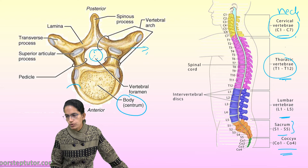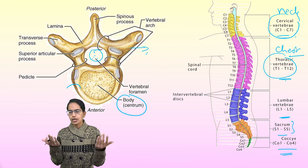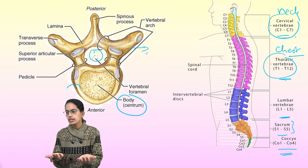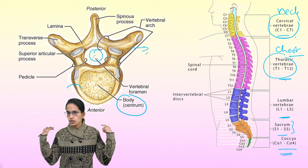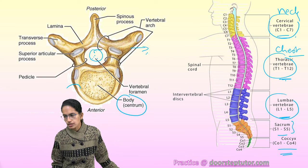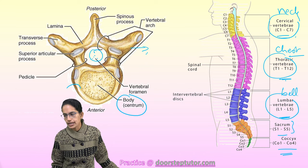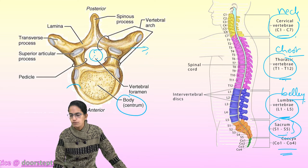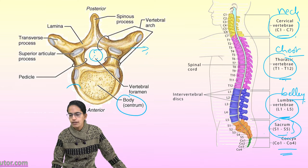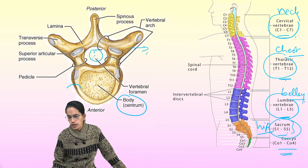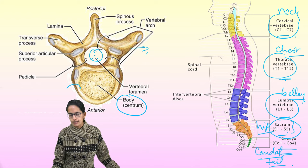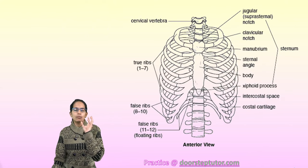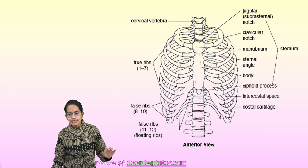The thoracic vertebra has 12 bones located in the chest region. Along with the sternum, it connects the ribcage — sternum connects it to the front and articulates it to the pectoral girdle. The lumbar has five bones found in the belly area and articulates the pelvic girdle. The sacrum is fused into one bone in the hip region, and finally the coccyx, or tailbone, is fused into one small bony piece.